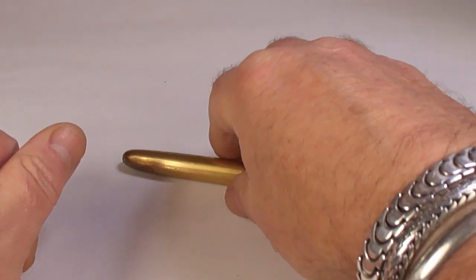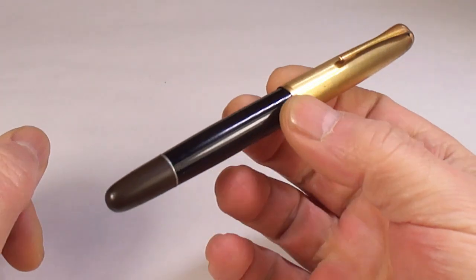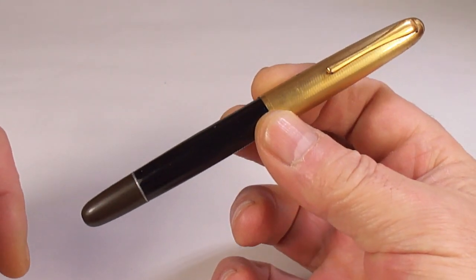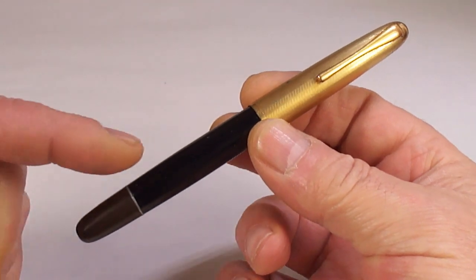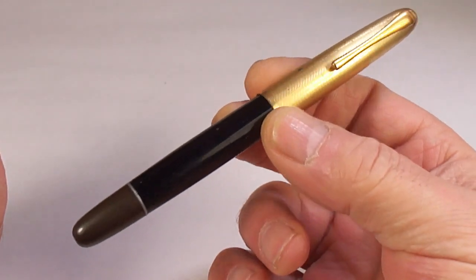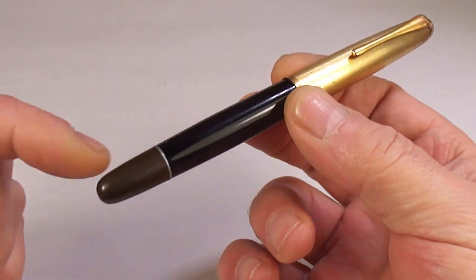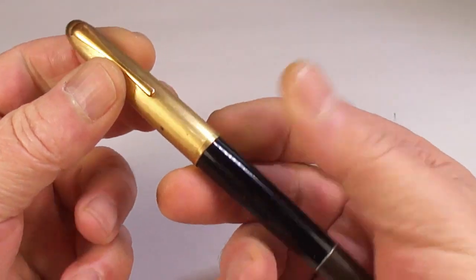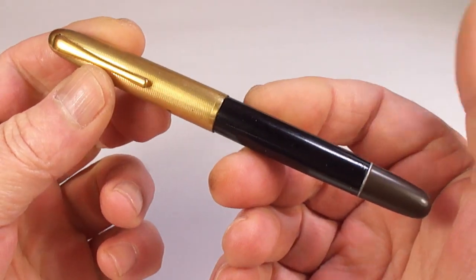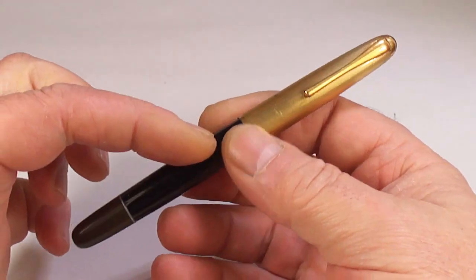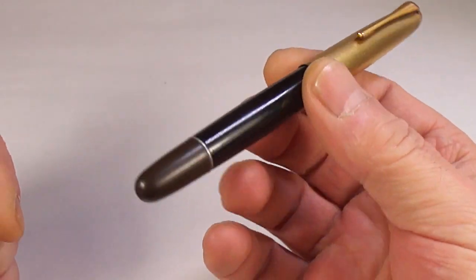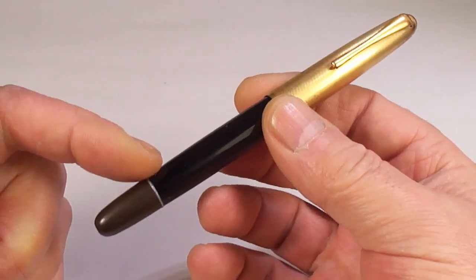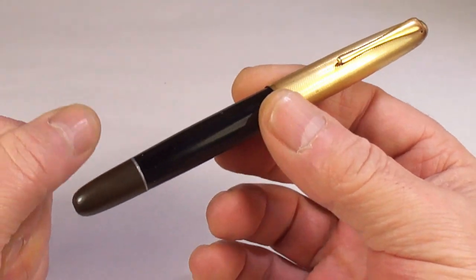Hi guys, Steph here. What we've got for you today is a gorgeous Italian made Aurora number 88 fountain pen. As you'll see, it's a piston filler fountain pen, but a lovely pen. Now this pen I came across recently, and what I thought I'd do is show you the pen before.